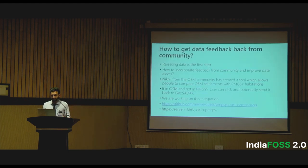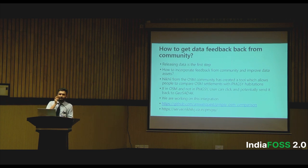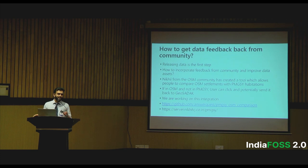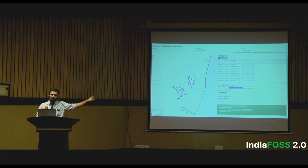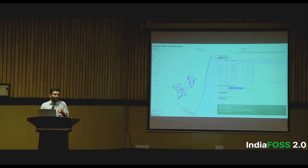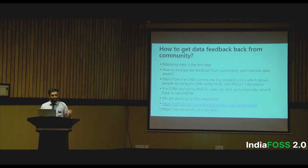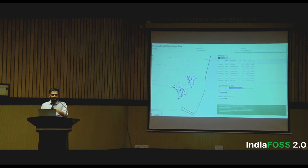A problem with releasing this data is: how do we get feedback? A lot of people said their village is not in the dataset, but we don't have a mechanism to get that information back. We partnered with Data Meet when releasing the data. Someone from the community came up with a tool themselves — this is the power of open source. They created a tool which shows all OSM habitations and does a diff with all PMGSY habitations, so you can find out which habitations are missing. You can click to either send it to us — we're creating an integration — or send it back to OSM. This is a tool from the community without us having to pitch for it. Shout out to Nikhil who made this and put the repository on Data Meet.